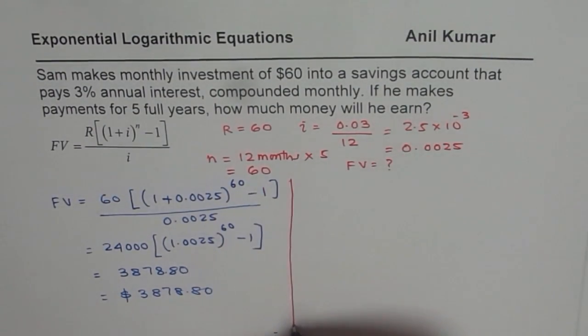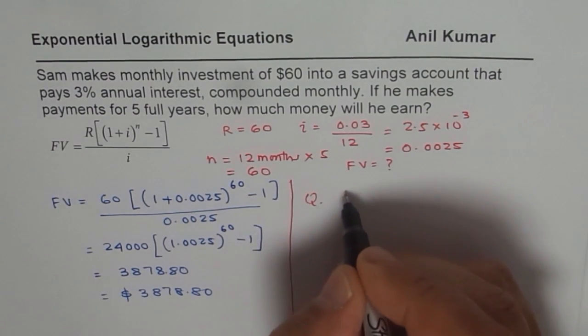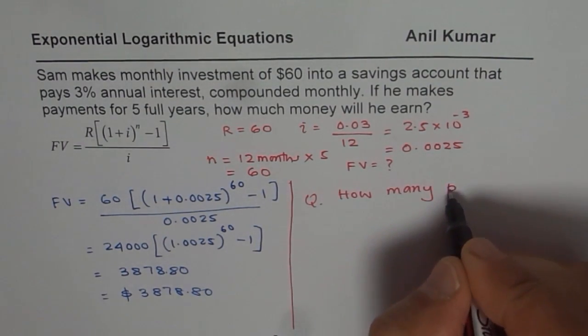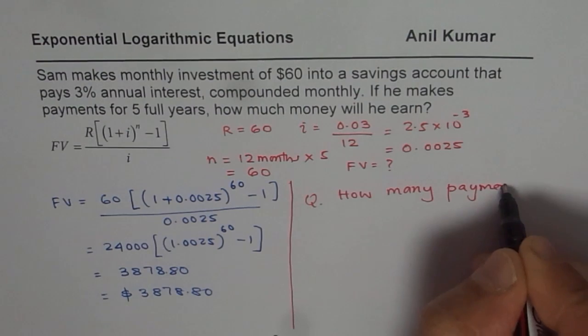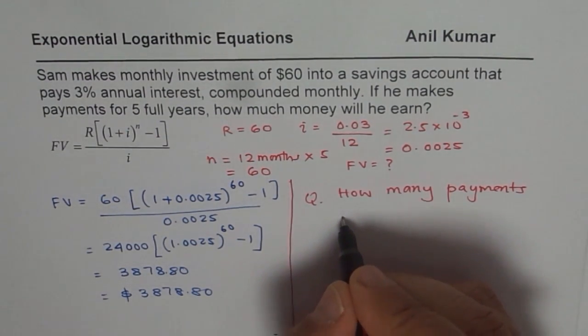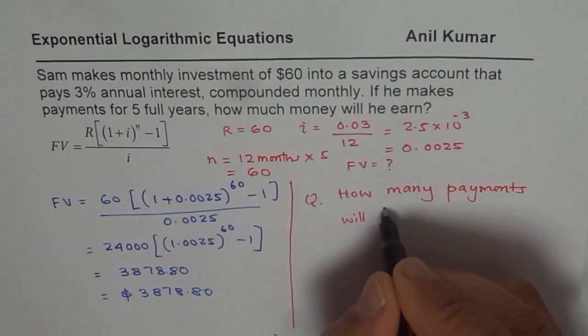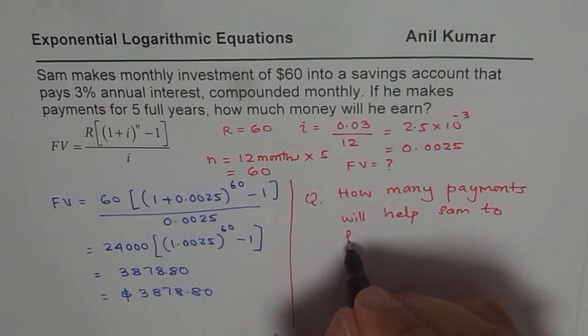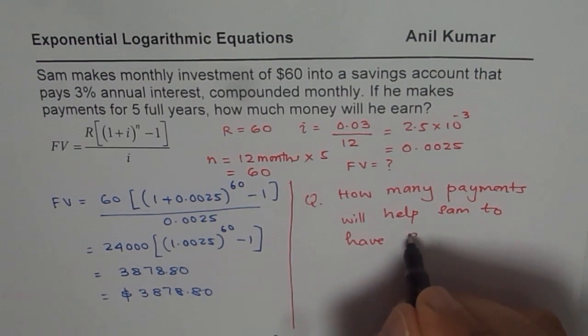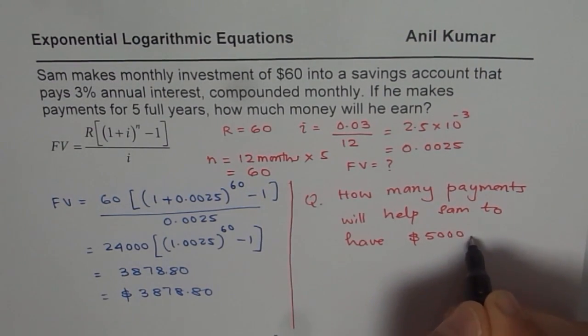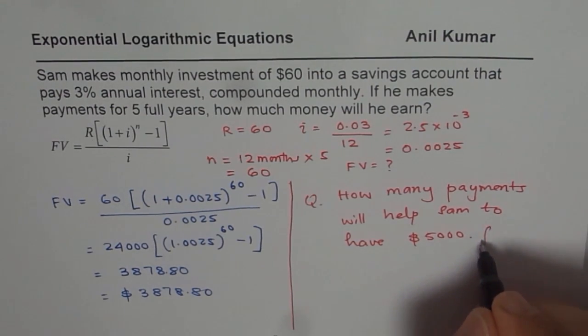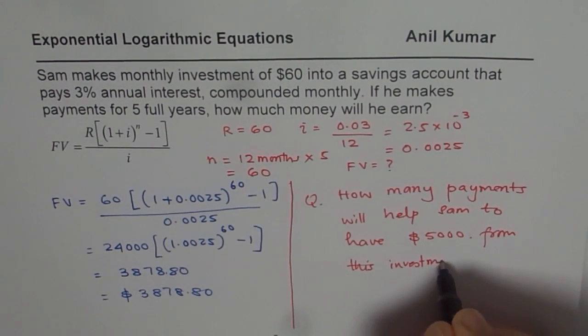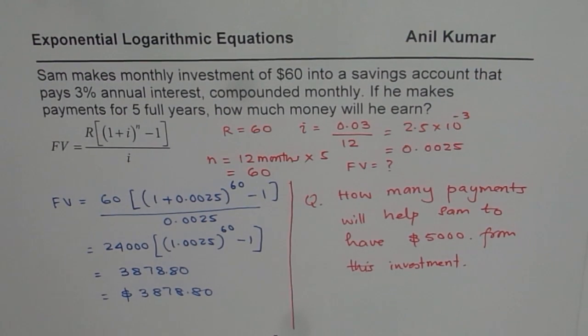Now what you can do here is, that is a part of your question, and the question for you is: how many installments, how many payments will help Sam to have, let's say, $5,000 from this investment?